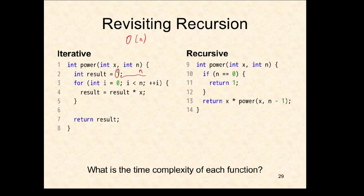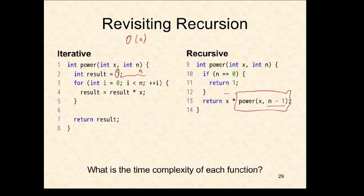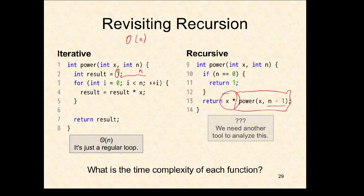Is the recursive power function tail recursive? Tail recursive means it returns immediately upon finishing the recursive call. Before the recursive call we do the n-1 subtraction, but after the recursive call returns, we still have a pending multiplication - so this is not tail recursive and will use the call stack. We expect that if we make n recursive calls it should be O(n) time, but we need another tool to analyze that - a recurrence relation.